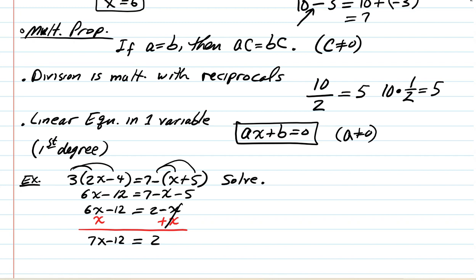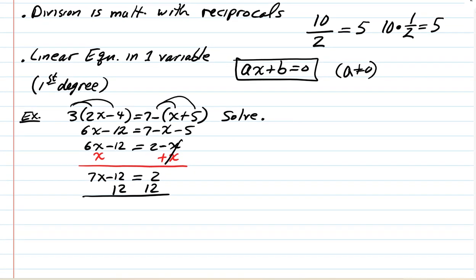Continuing, add 12 to both sides: 7x equals 14. Now use the multiplication property — divide both sides by 7 — and we get x equals 2. That is the solution. As always, you can check by plugging back into the original equation. You always plug into the original, not an intermediate step, and verify you get a true statement.